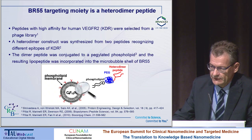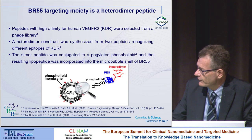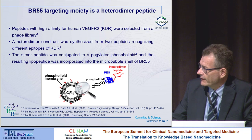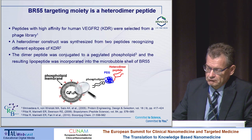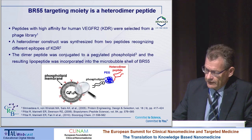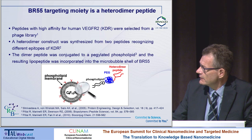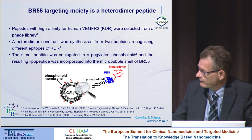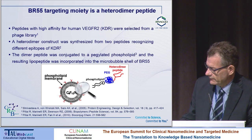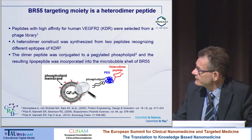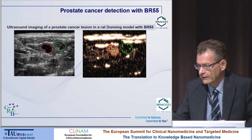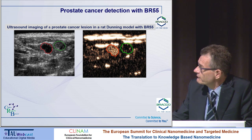We developed a microbubble system — a phospholipid membrane with gas inside for echogenicity — and added a specific recognition functionality: a heterodimer peptide consisting of two different peptides recognizing two different epitopes of the same molecule. These peptides were selected using phage display, giving very high affinity. With this system, we can recognize tumor very well.